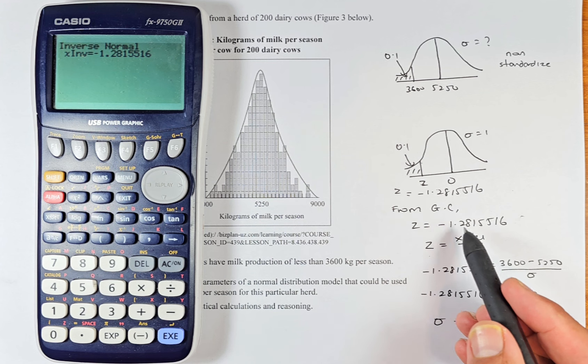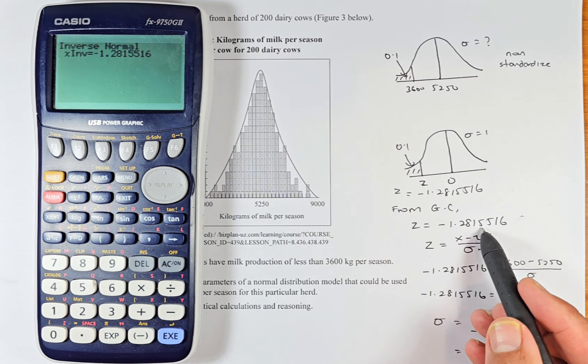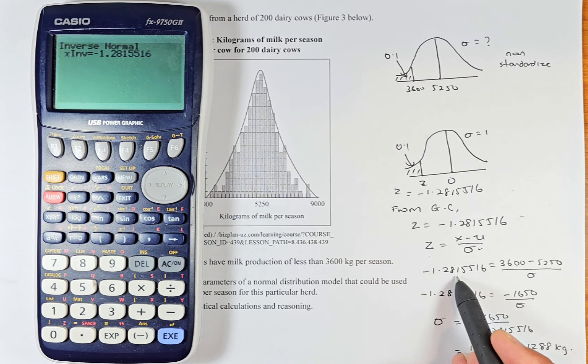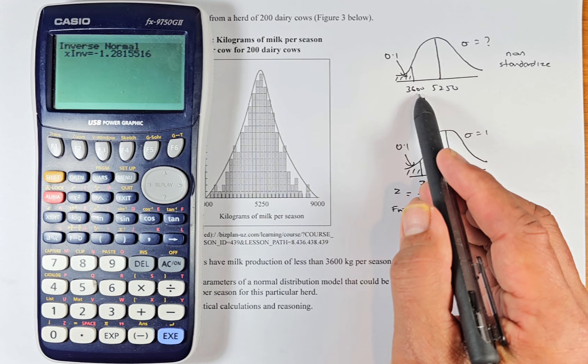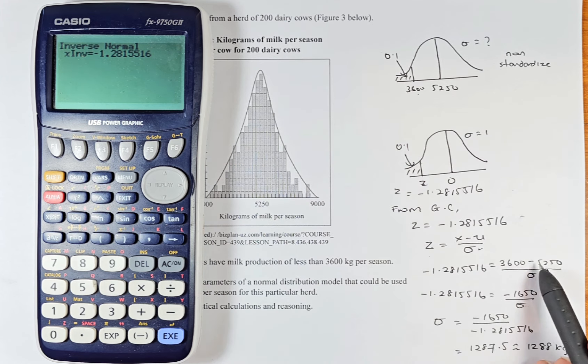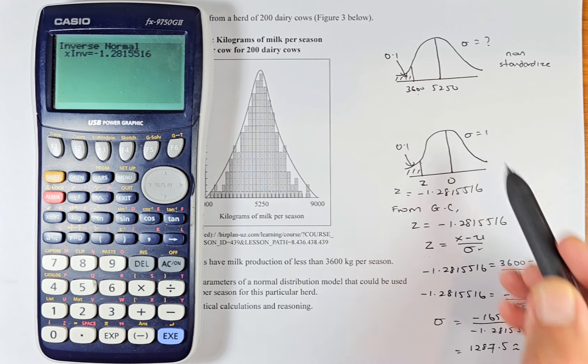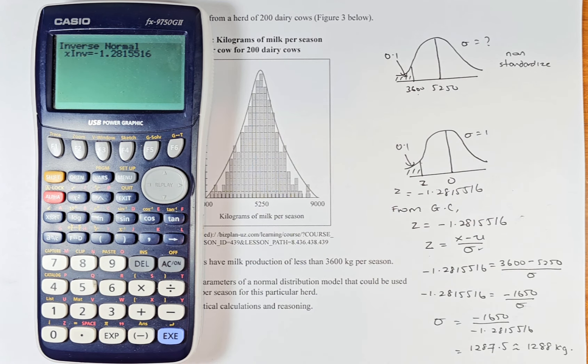So z is minus 1.28155516. That is replaced by that number. So x is your number here, 3600 minus the mean is 5,250 because now we are working on the non-standardized. And the sigma is what we're going to find. So we are going to solve this now. So to do that, we just need to minus 3600 by 5,250. It's going to be minus 1,650. So this remains. So minus 1,650 divided by sigma.